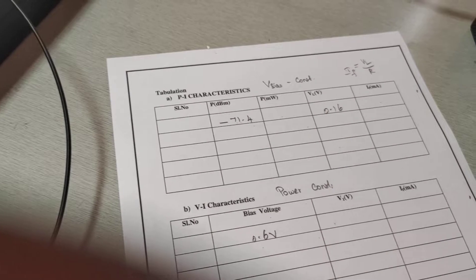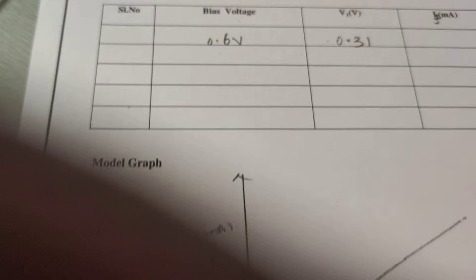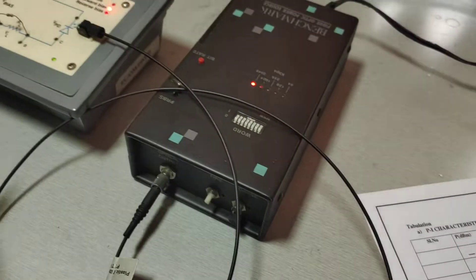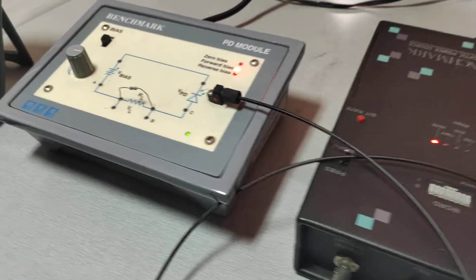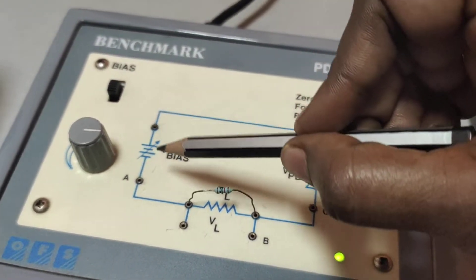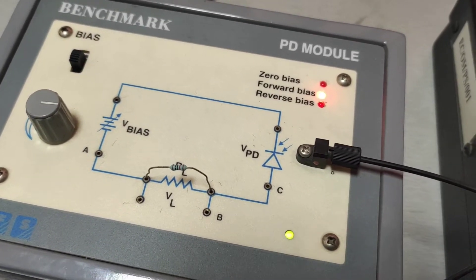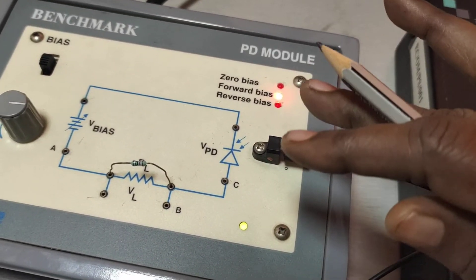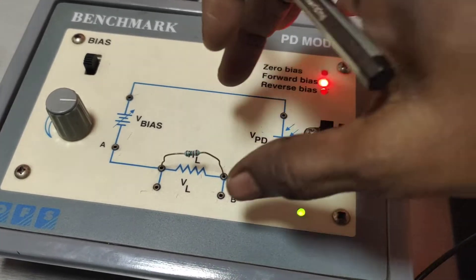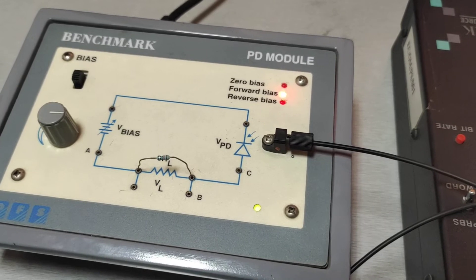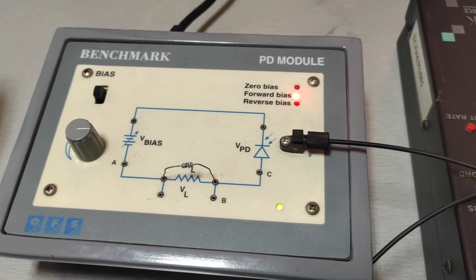With the bias voltage set to 0.6 V, the measured voltage VL is 0.31 V. From this, the forward current IF is calculated as VL divided by 10 kilohm. By varying the bias voltage, we find the current flowing through the photodiode under forward bias conditions. The optical power source is kept constant, and the photodiode converts the incident optical signal into electrical current.